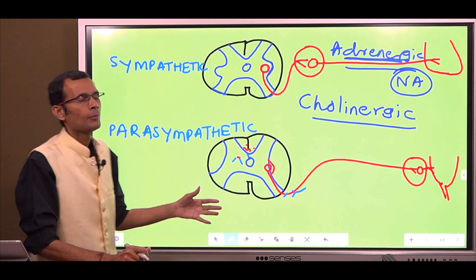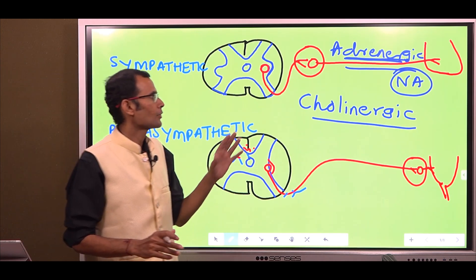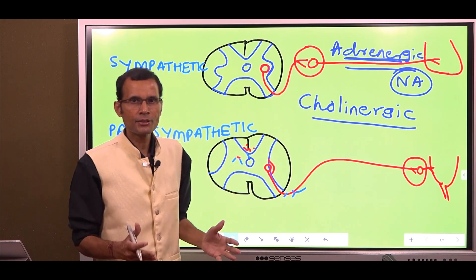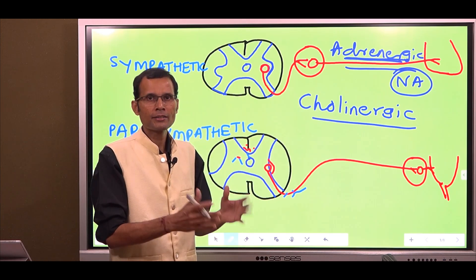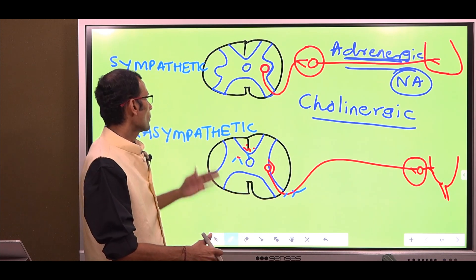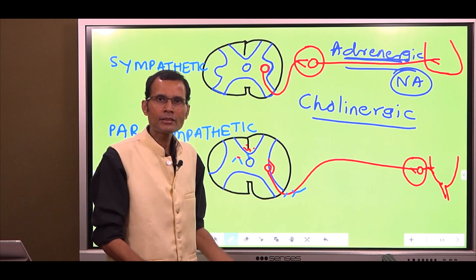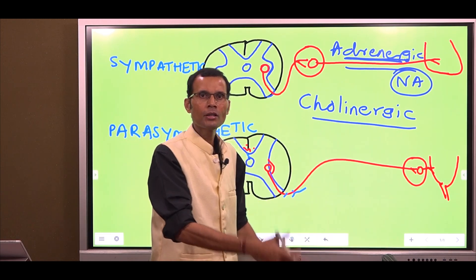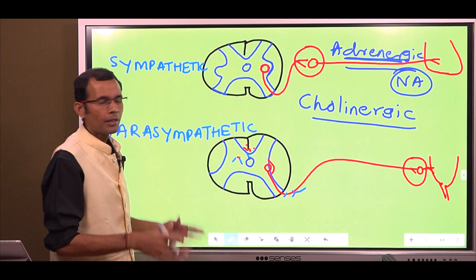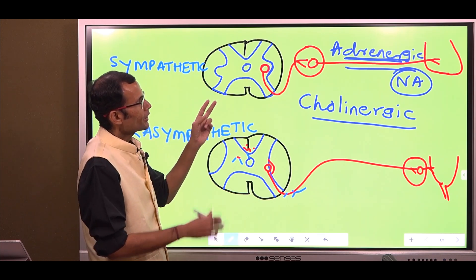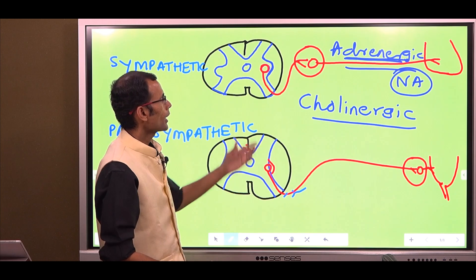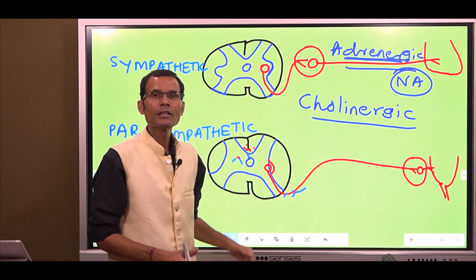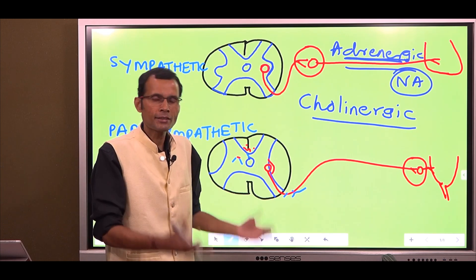In quick summary: the sympathetic system exerts its effect via noradrenaline as the neurotransmitter, while the parasympathetic system exerts its effect via acetylcholine released on the organs and viscera. However, the relay of impulse transmission occurring at the ganglia — whether sympathetic or parasympathetic — occurs because of acetylcholine.